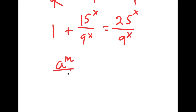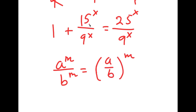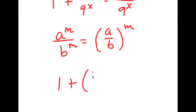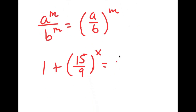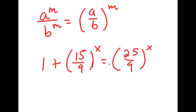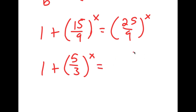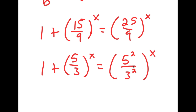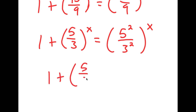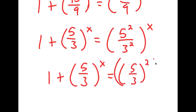If I have something in the form a to the power of m over b to the power of m, this is the same thing as a over b to the power of m. So 15^x over 9^x equals 15 over 9 to the power of x, and 25^x over 9^x equals 25 over 9 to the power of x. Now, 15 over 9 simplifies to 5 over 3, and 25 over 9 simplifies to 5 squared over 3 squared.